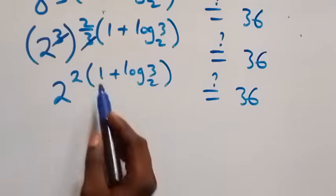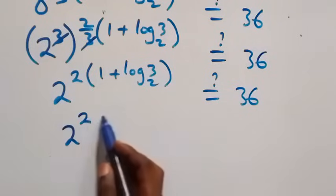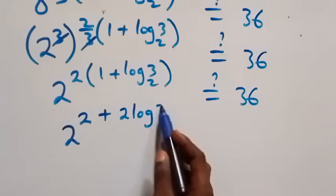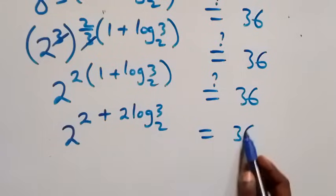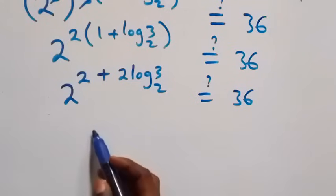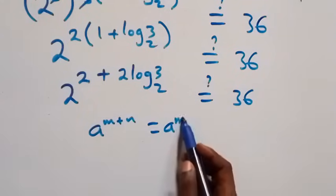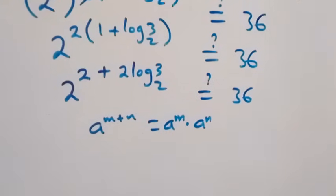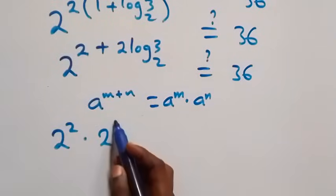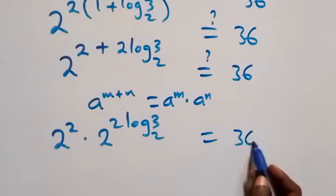Distributing the 2, we get 2 raised to power (2 plus log 3 base 2) equals 36. Applying the law of indices — a raised to power (m plus n) equals a^m times a^n — this becomes 2 raised to power 2 times 2 raised to power log 3 base 2, equals 36.